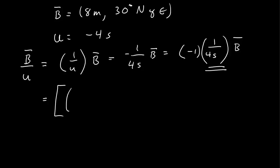So I have 1 over 4 seconds times 8 meters as the magnitude. Then the negative 1 flips the direction, and so 30 degrees north becomes 30 degrees south of west.